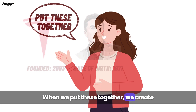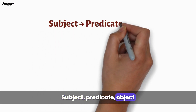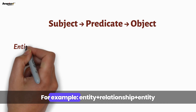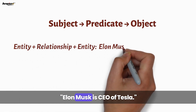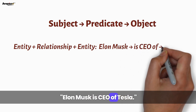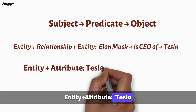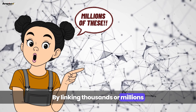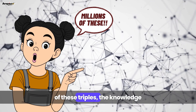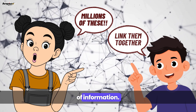When we put these together, we create facts in the form of triples: subject, predicate, object. For example: entity plus relationship plus entity — Elon Musk is CEO of Tesla. Or entity plus attribute — Tesla, founded in 2003. By linking thousands or millions of these triples, the Knowledge Graph forms a rich and connected map of information.